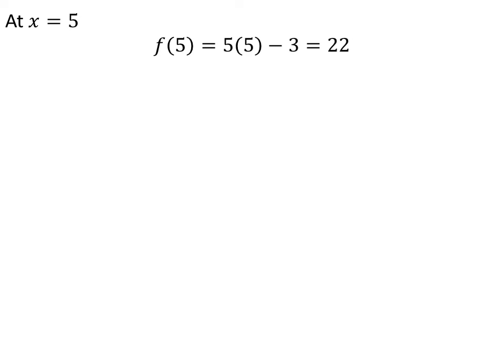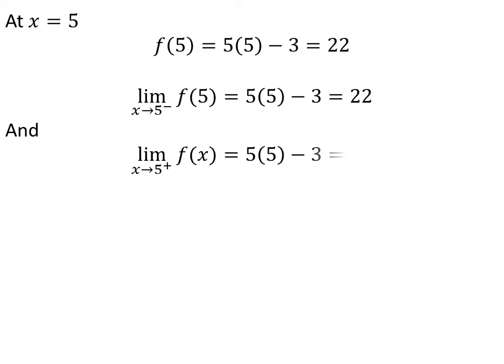Let us check the function 5x - 3 continuity at x = 5. The function is defined at x = 5 and its value is 22. Now, find the limit of the function when x approaches 5 from the left — the value of the limit is 22. Similarly, the right limit is 22.